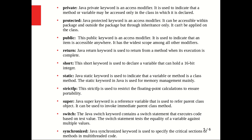The super keyword is a reference variable used to refer to the parent class object; it can be used to invoke the immediate parent class method. The switch keyword contains a switch statement that executes code based on a test value — it tests the equality of a variable against multiple values. The synchronized keyword is used to specify the critical section or a method in multi-threaded code.